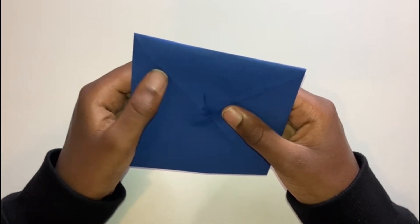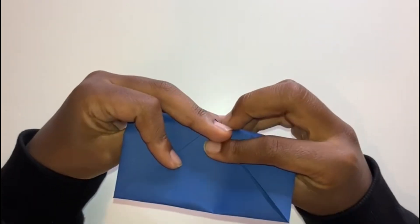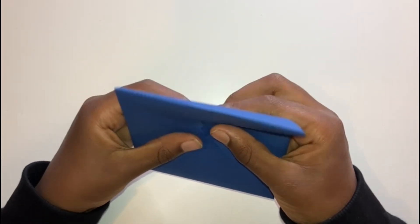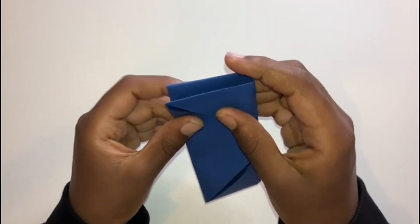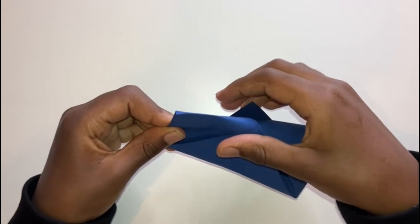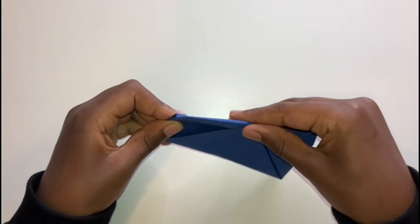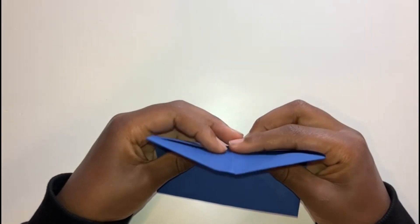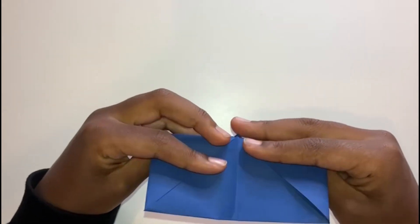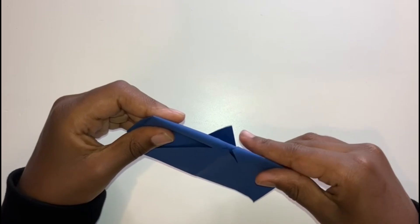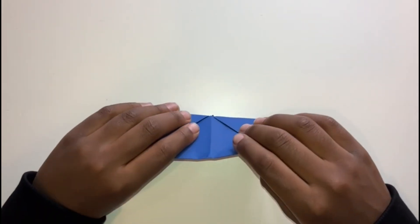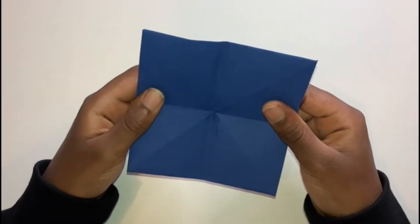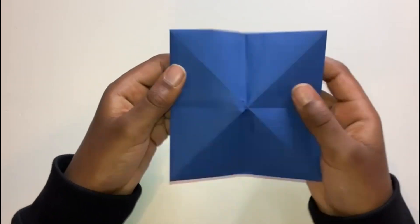And then what you want to do is make sure that you fold this like that, so this fold and the fold that you're about to do aren't the same. Fold it in half like so. See, they're not the same. And open it back up. Oh, and if it's like this, just poke it up.